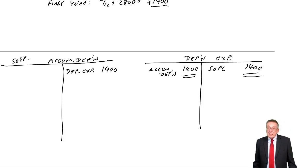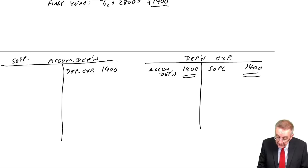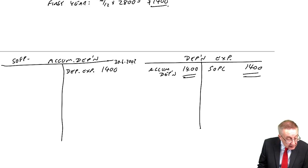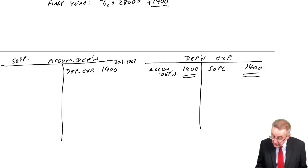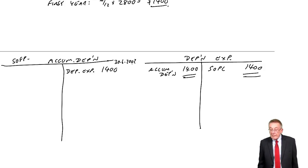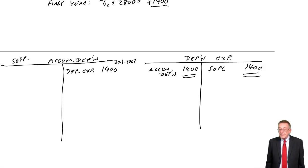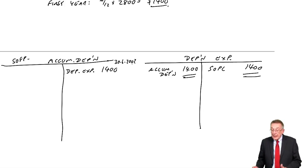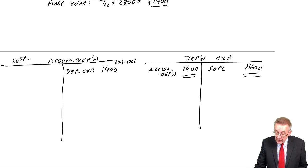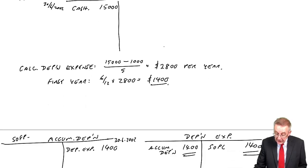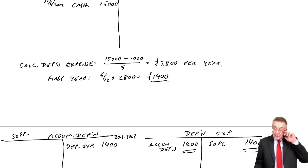That's the end of the first year — 30th of June 2002. There are the balances: no balance on the expense account, but we've got the balances on the car and the accumulated depreciation.